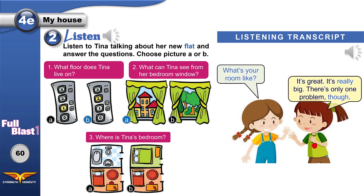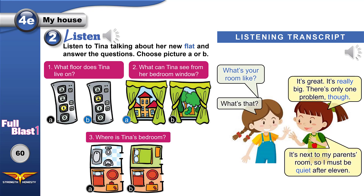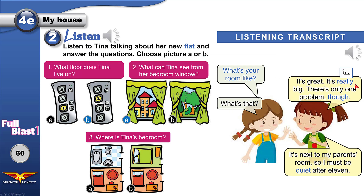What's your room like? — It's great. It's really big. There's only one problem though. — What's that? — It's next to my parents' room, so I must be quiet after 11. 'What's your room like?' means tell me about your room, describe your room. 'Really' means truly. 'Though' means despite that — despite being great and big, there's one problem. 'I must be quiet' — I mustn't make noise. So her room is next to her parents' room. The answer is B.